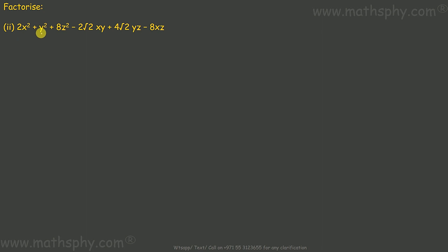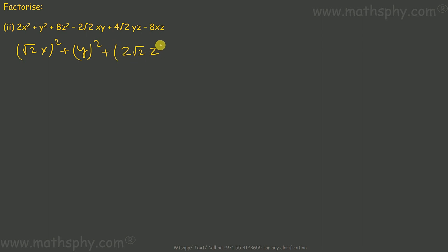Now this one: 2x² + y² + 8z² - 2√2·xy - 4√2·yz - 8xz. Here 2x² can be written as (√2·x)², 8z² as (2√2·z)², since (2√2)² = 4·2 = 8. Same problem — some terms are negative and some are positive, so out of x, y, and z, at least one should be negative and at most two should be negative.